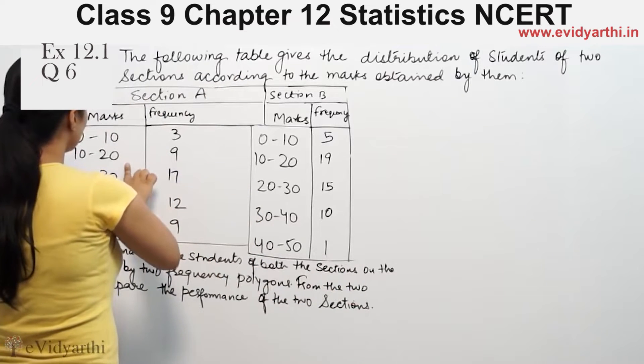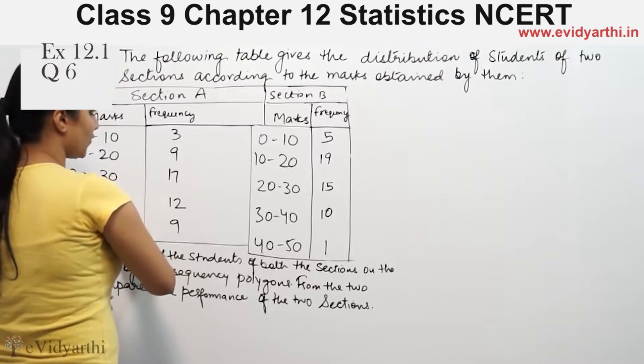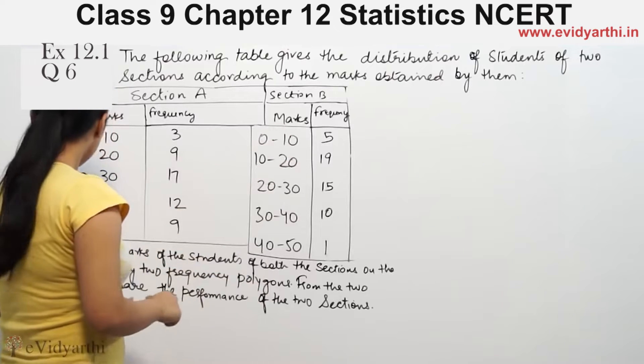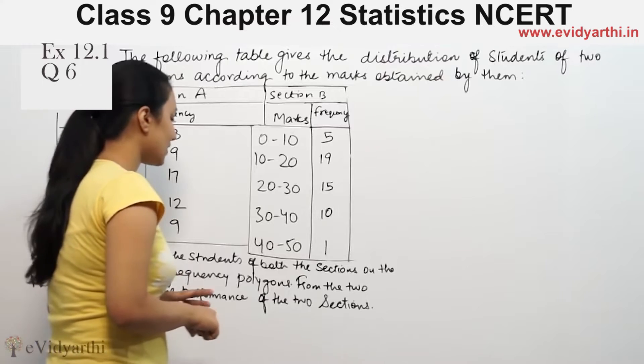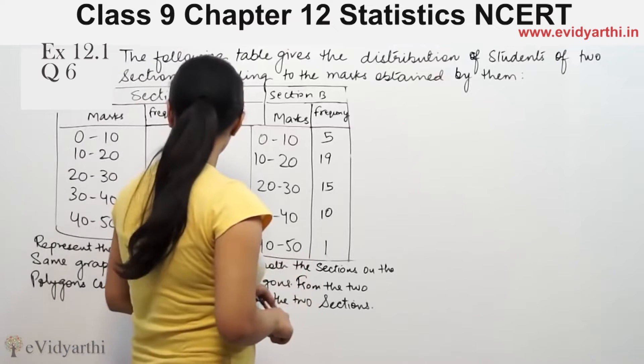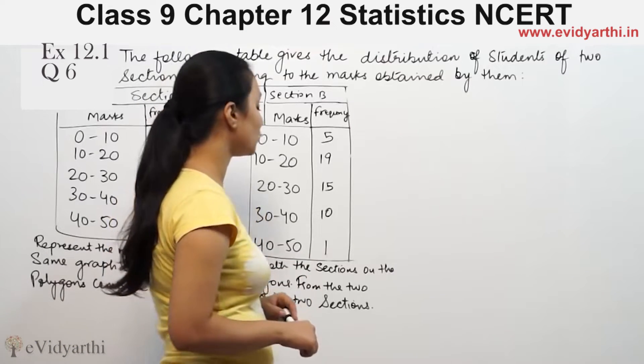The sections are based on marks ranges: 0-10, 10-20, 20-30, 30-40, 40-50. The task is to represent the marks of the students of both sections on the same graph by two frequency polygons, and from the polygons, infer the performance of the students.